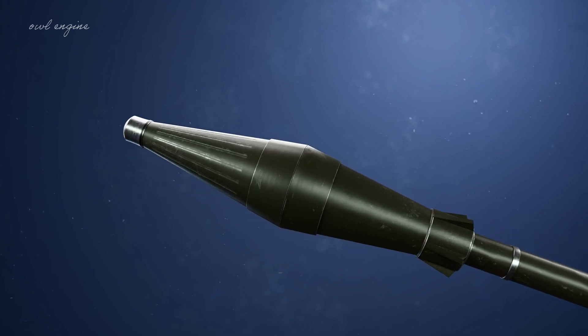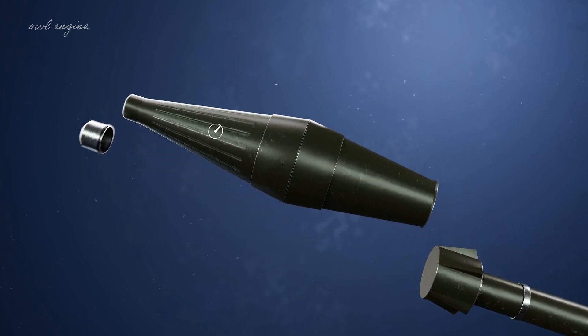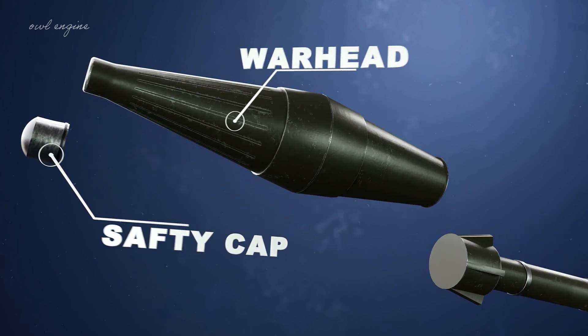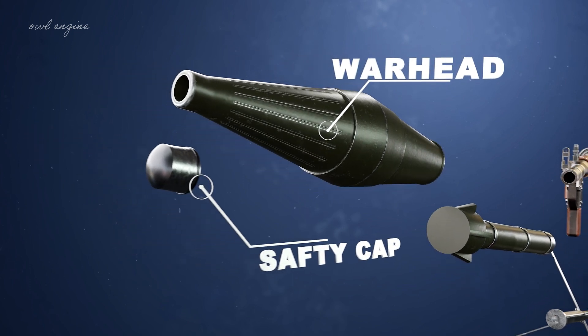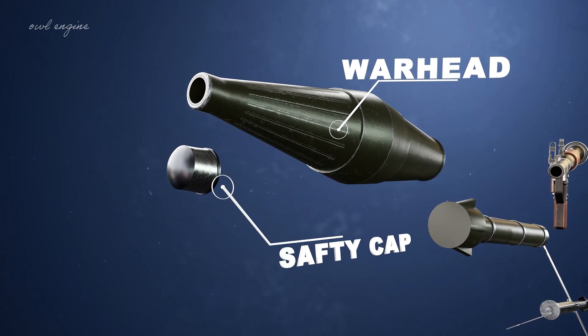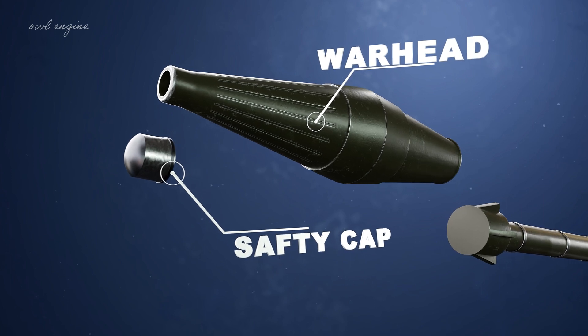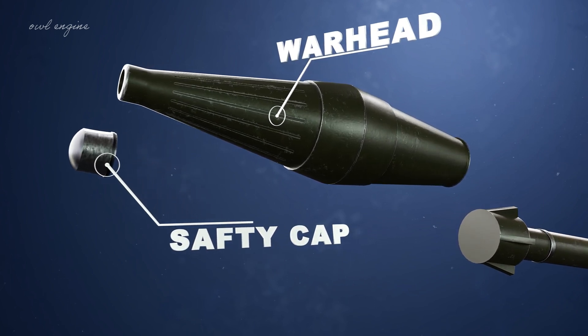This part is known as the inertial propellant grenade, which consists of the warhead. An RPG warhead is the explosive component of a rocket-propelled grenade, the part that contains the payload designed to cause damage to the target.